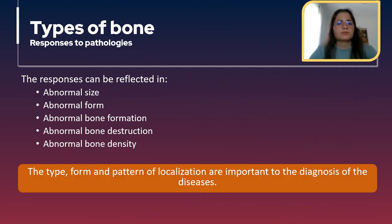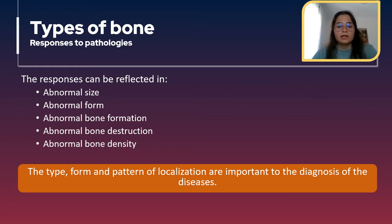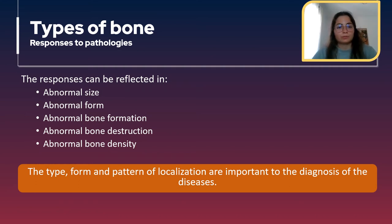The responses of the bone can be reflected in abnormal size, abnormal form, abnormal bone formation, abnormal bone destruction, and abnormal bone density. It's very important to note the type, form, and pattern of localization of the lesions, because this is important for the diagnosis of diseases.